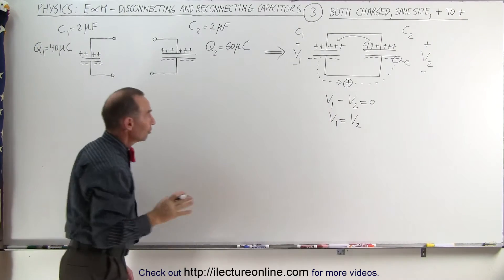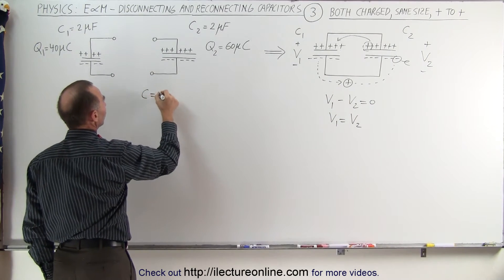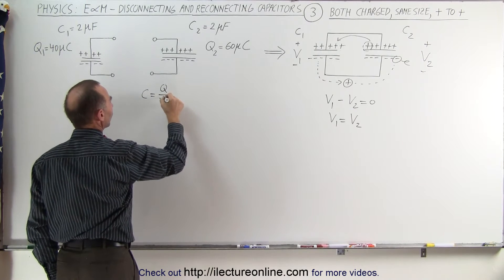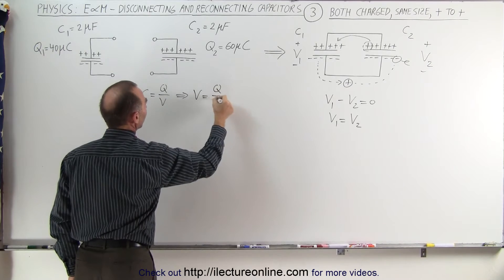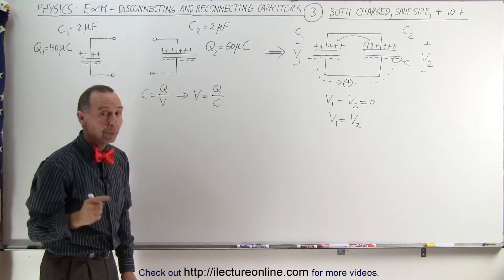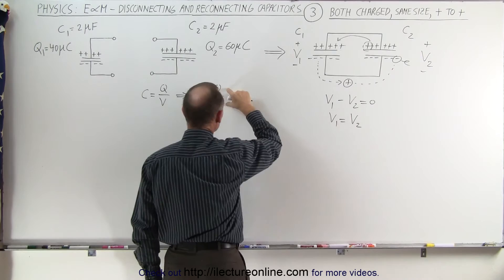Using the definition of capacitance, we know that capacitance is equal to charge divided by the voltage, which means that voltage is equal to charge divided by capacitance. What we're going to do now is to replace V1 and V2 by this ratio.